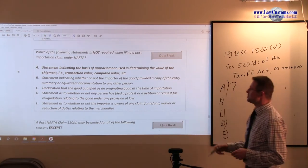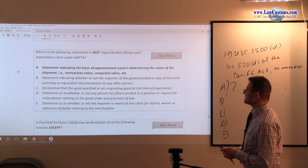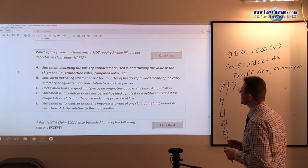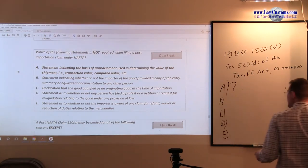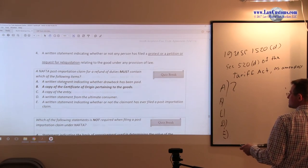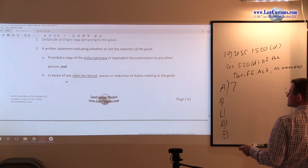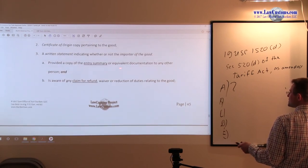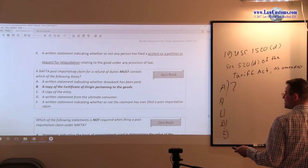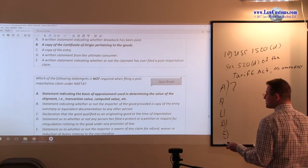So again, we are looking for the one that's not required. Statement indicating whether or not importer of good provides a copy of the entry summary or equivalent documentation to any other person. Copy of entry summary or equivalent documentation, statement by the importer is part of the laundry list. So we are looking for the one that's not, so B is out.